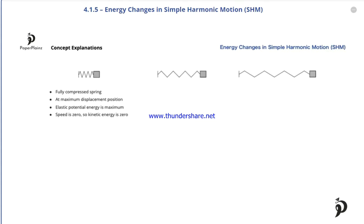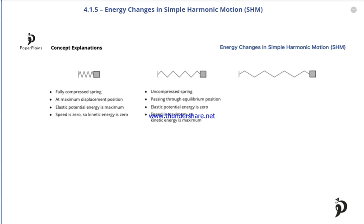Then the spring starts to decompress and the object starts moving to the right. During this, the elastic potential energy stored in the spring is converted into the kinetic energy of the object. At some point, the spring reaches a position where it's uncompressed. At this moment, the object is passing through the equilibrium position. Since the spring is neither compressed nor stretched, the elastic potential energy is zero. Since energy cannot be lost, only converted into a different form, we can conclude that at this point the speed of the object is maximum, therefore its kinetic energy is also maximum.